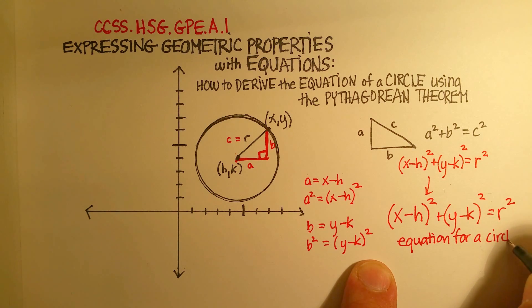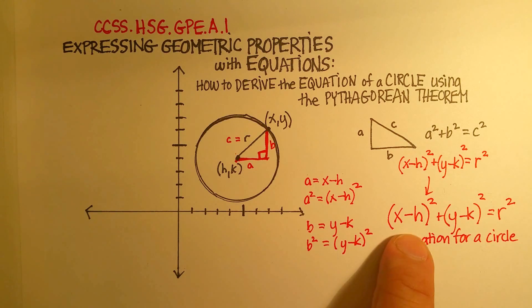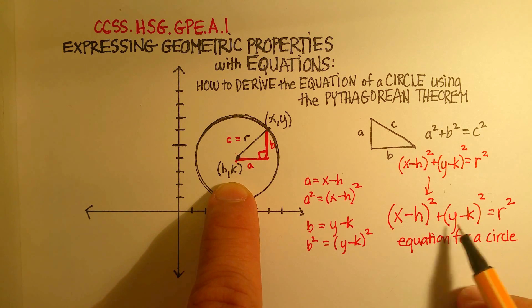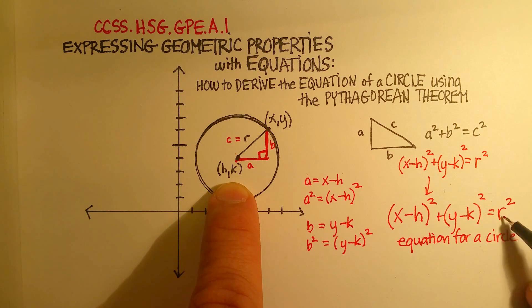Let's identify the parts. The h and k are the center point of any circle. The r is the radius, and that's squared.